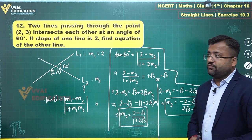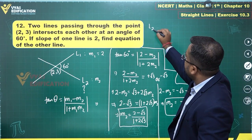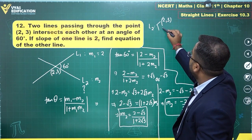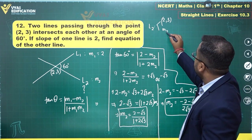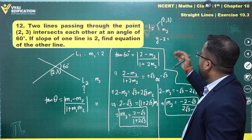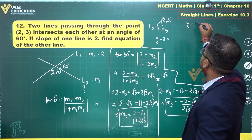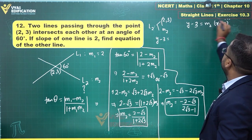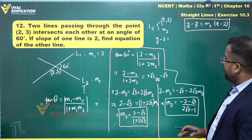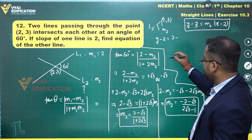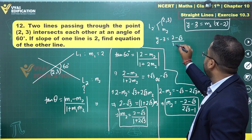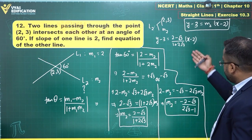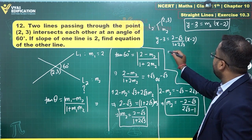Now we find the equations of L2 using these two values of m2. We have the point (2, 3). Using the point-slope form: y − 3 = m2·(x − 2). Substituting the first value of m2 = (2 − √3) / (1 + 2√3), the equation becomes: y − 3 = [(2 − √3) / (1 + 2√3)]·(x − 2).